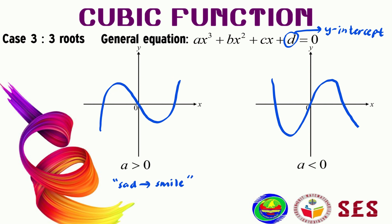When 'a' is negative, we will have from smile to sad. So this right here — we have smile to sad. Let us now discuss a few questions on how to sketch a cubic function when we have three roots.